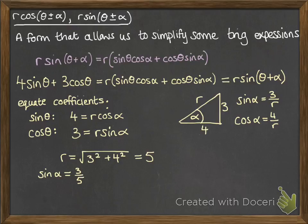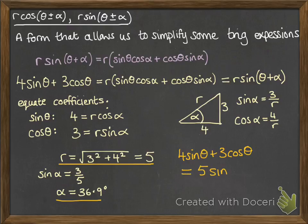So now from there, we can get that sine alpha must be 3 over 5, so alpha has to be 36.9 degrees just by doing the inverse of that. So now we have worked out our r value and alpha value, we can express this in the form that we want. So it'll be 5 sine theta plus 36.9 degrees.